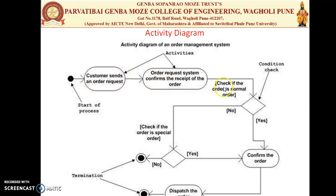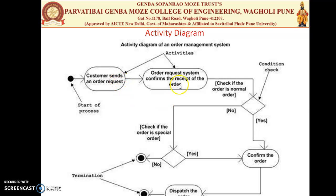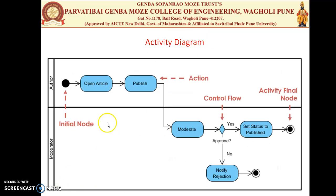This diagram shows the flow of the system — the customer places an order for goods, the system checks availability, and after dispatching, the customer receives the goods. The start notation is a solid dot with an arrow to the first activity, followed by flows between activities, decision boxes checking conditions and constraints, and a termination node.